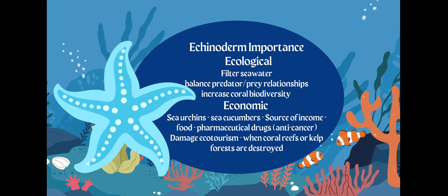So why do we need echinoderms in the ocean? They're going to filter seawater. They're also going to balance a predator-prey relationship, so they can actually consume some prey. Their mouths are actually on the underside of them. You can't really see it in our cartoon sea star, but they do balance that predator-prey relationship and they do increase biodiversity at coral reefs.